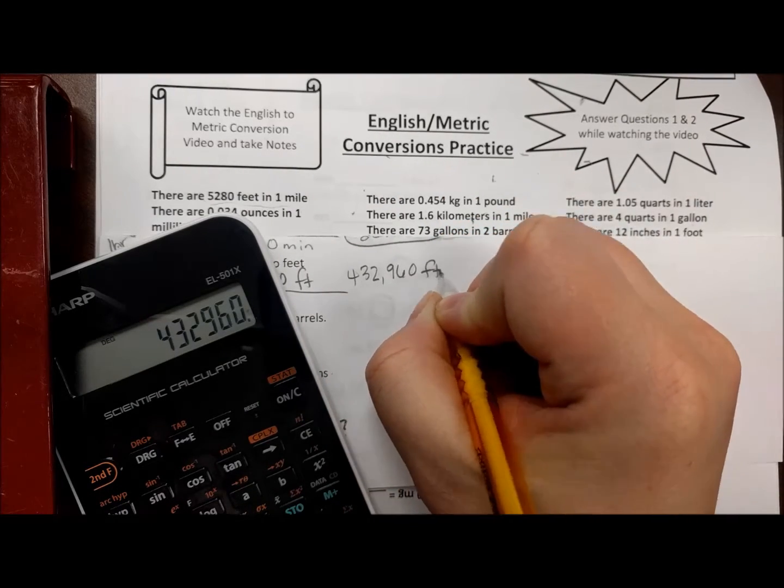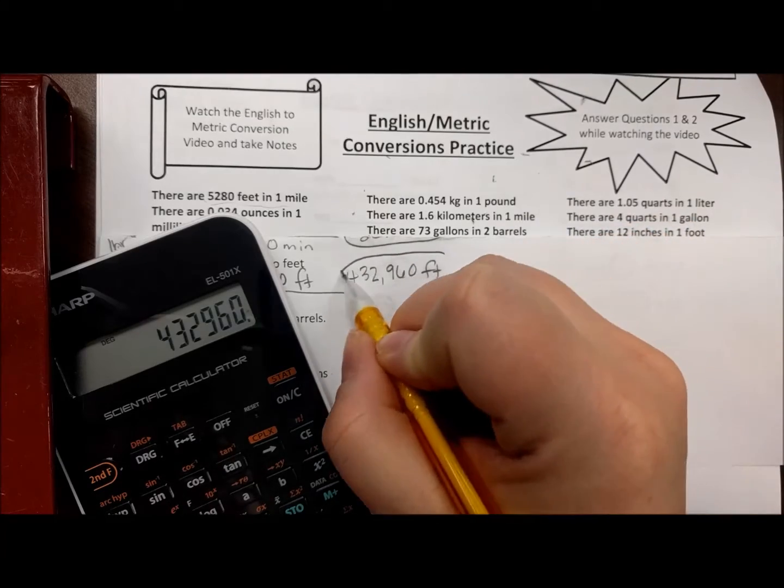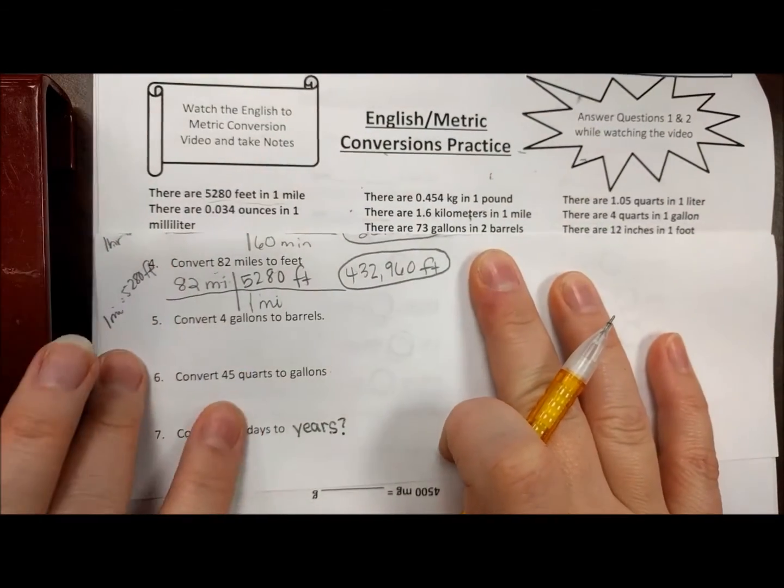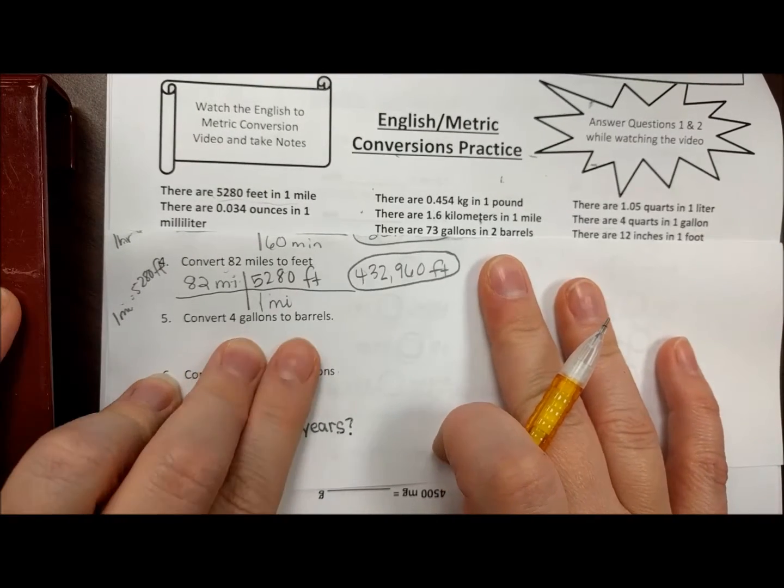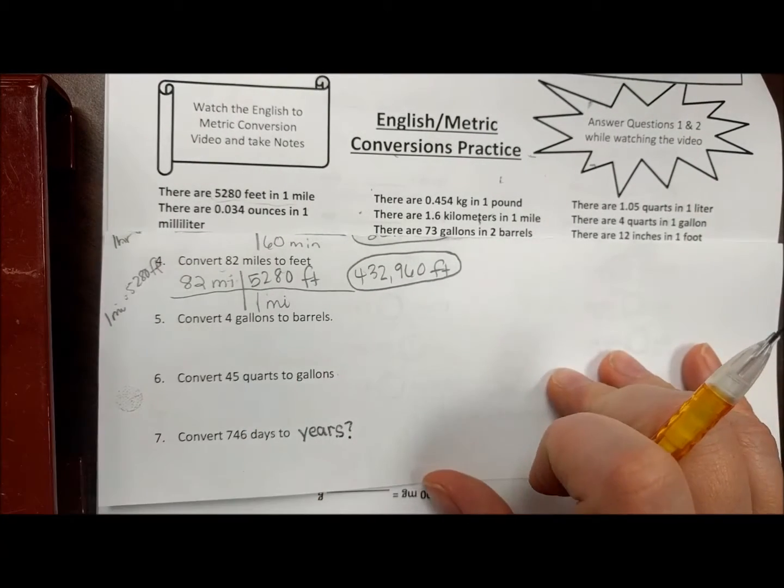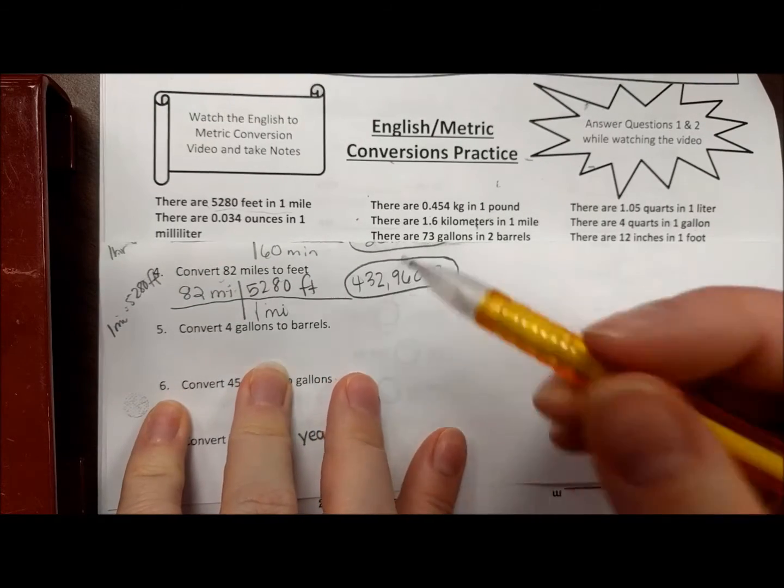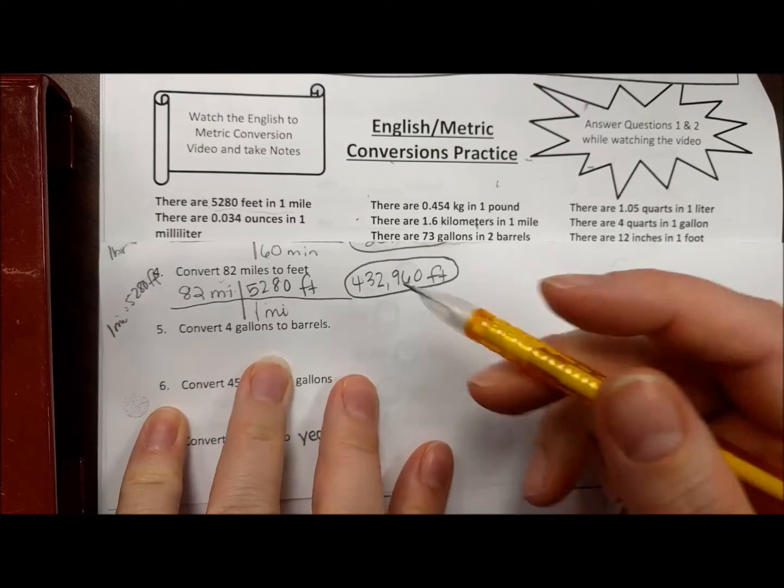We're going to do gallons to barrels. Some of you may never have even heard of a barrel before—you can buy root beer by the barrel, it's kind of like a little keg. So I'm going to write what they give me: four gallons. And then I'm going to see if I can find a conversion factor for gallons to barrels.